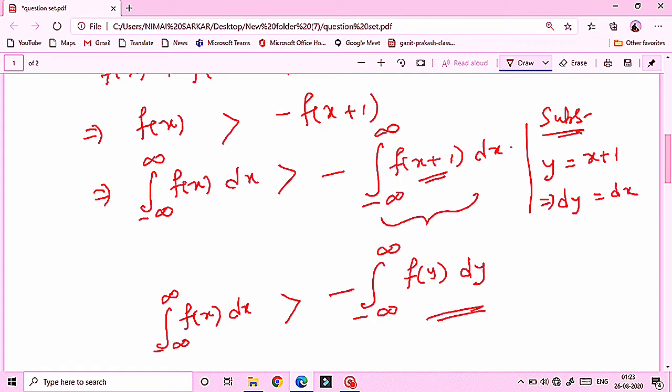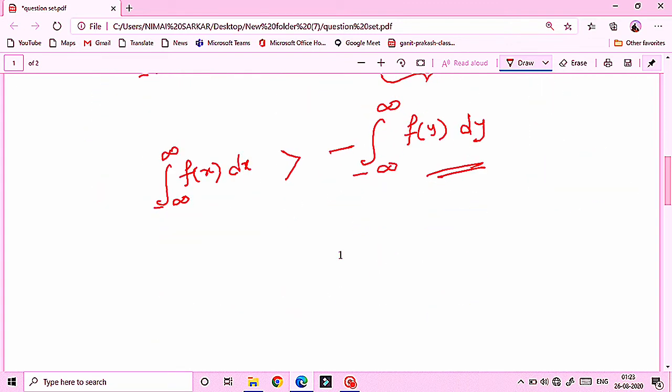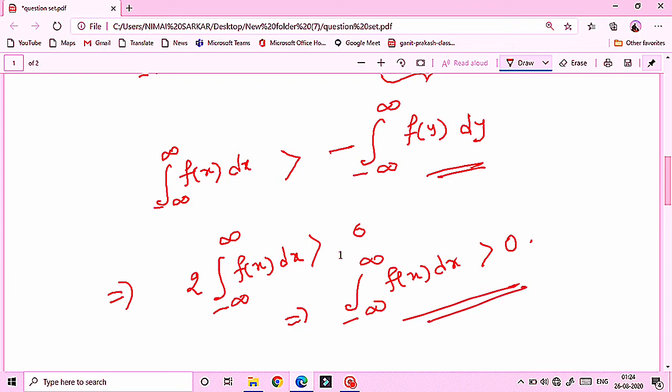So what we can do? Definite integral, a property. You have straightforward. This is just variable change. Directly you will get minus infinity to plus infinity fx dx. It is greater than 0. That immediately implies minus infinity to plus infinity fx dx is greater than 0. Correct.